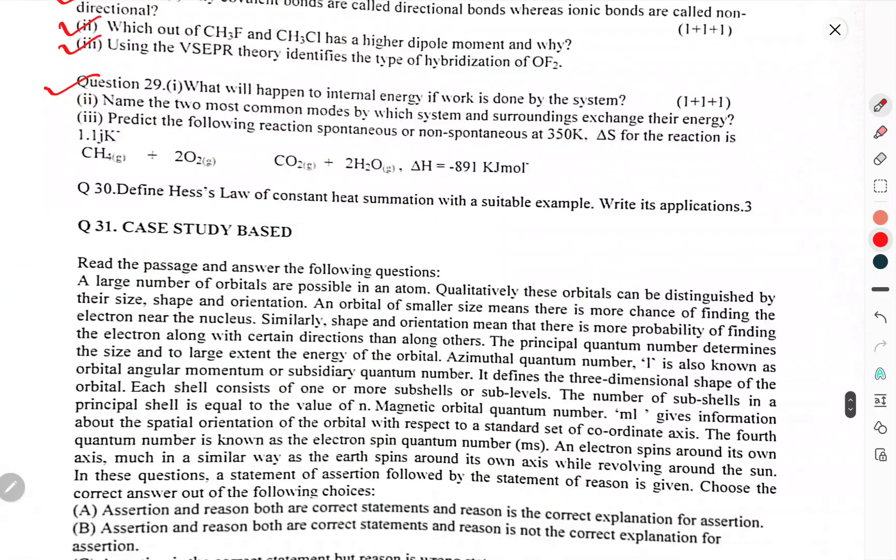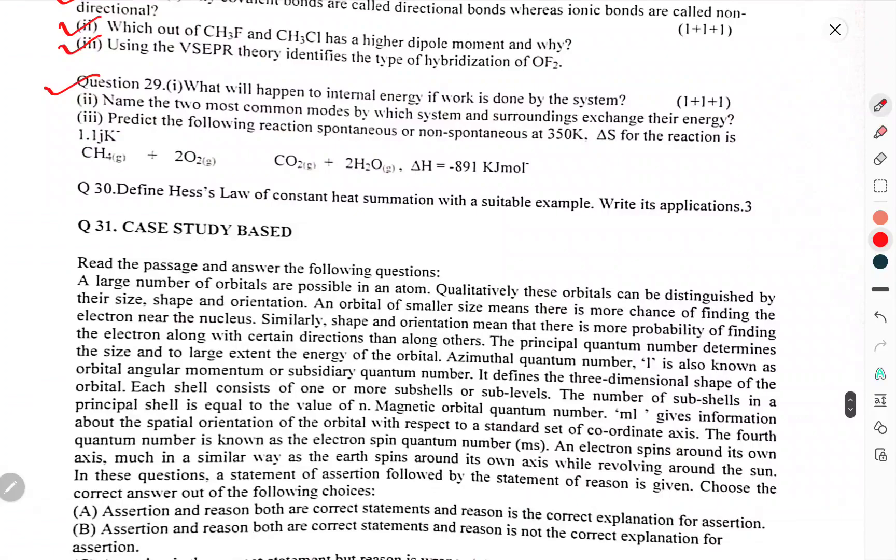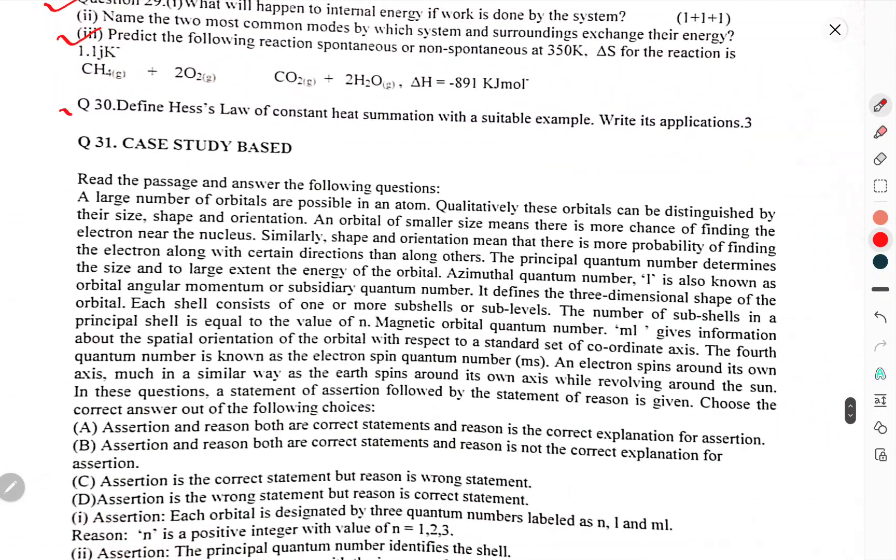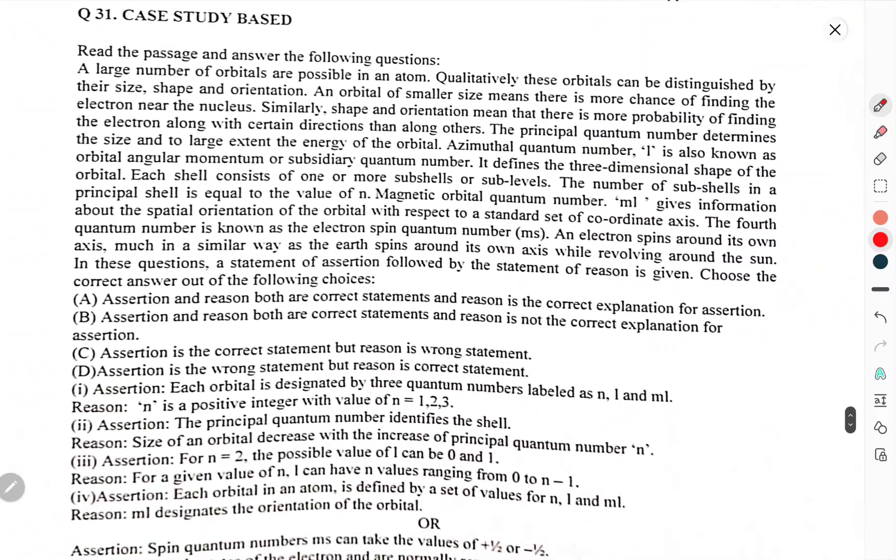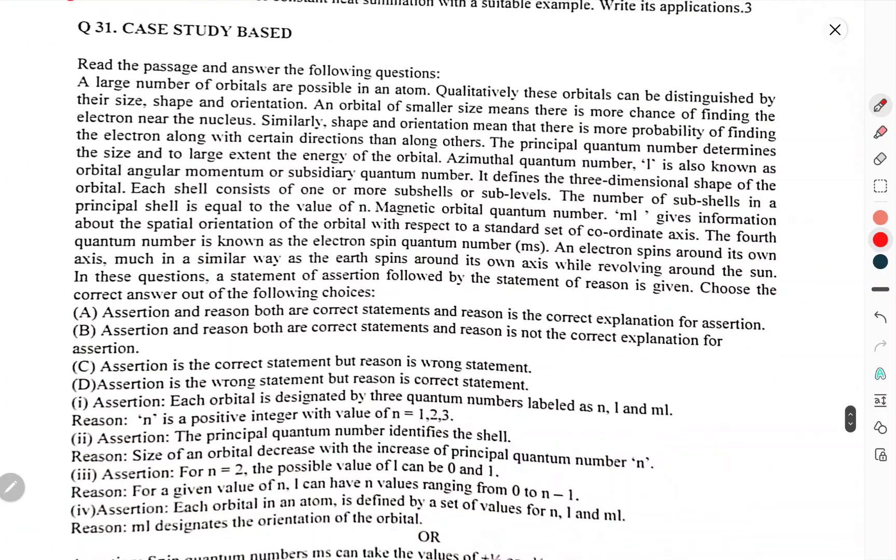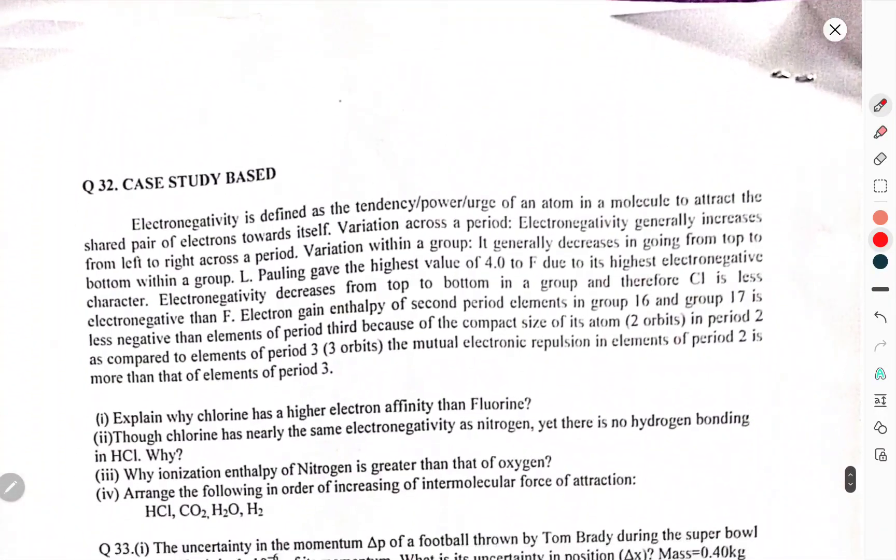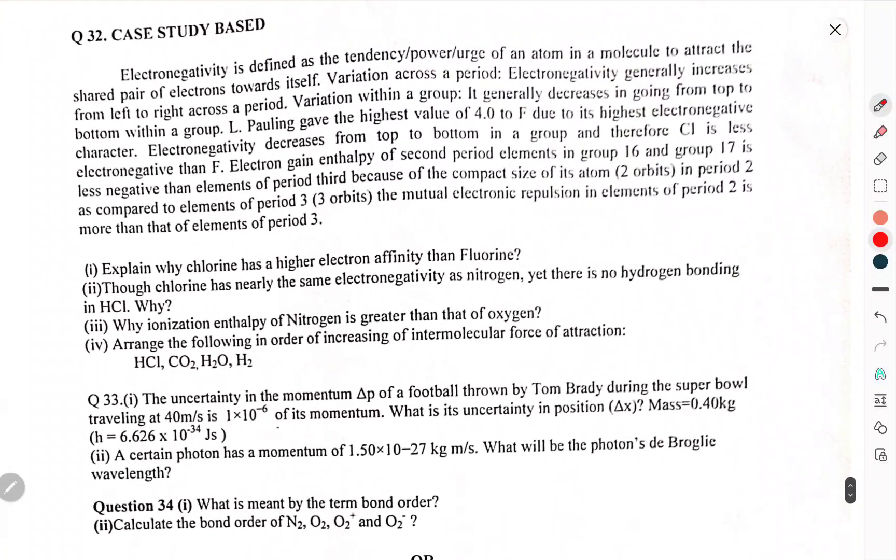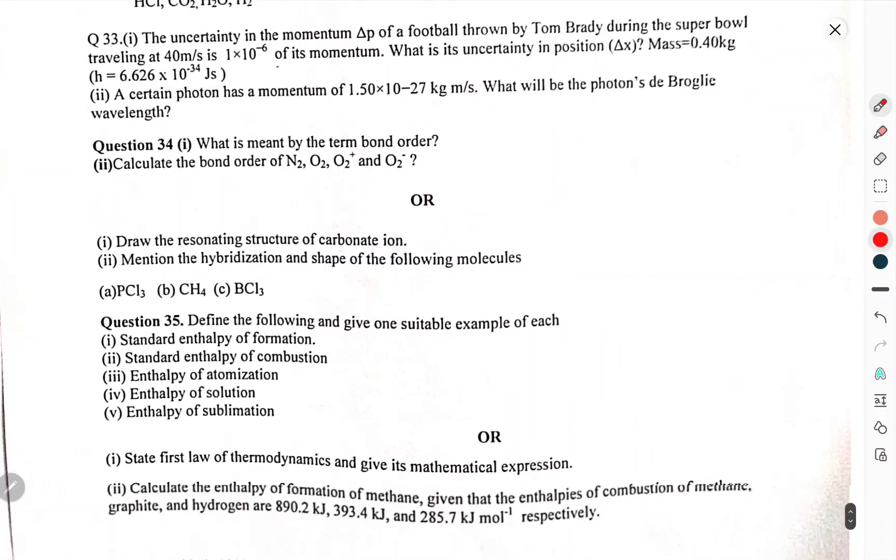Question 29: What will happen to the internal energy if work is done by the system? Name the two most common modes by which system and surroundings exchange their energy. Predict whether the following reaction is spontaneous or non-spontaneous at 350 Kelvin. ΔS for the reaction is 1.1 Joule per Kelvin. Define Hess's law of constant heat summation with suitable examples. Write the applications. Case study: You have to read all these questions. Case study Question 32: You have to read it yourself.